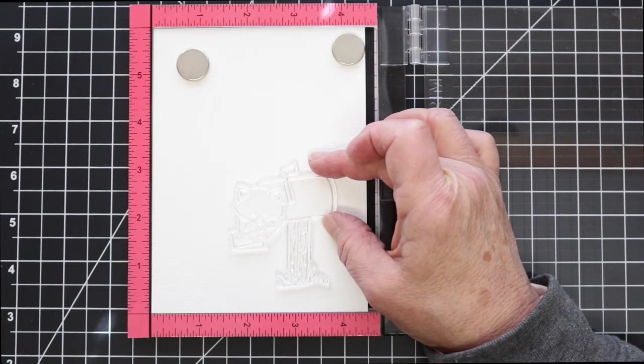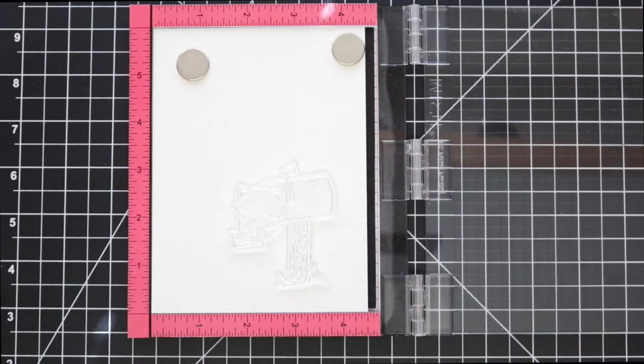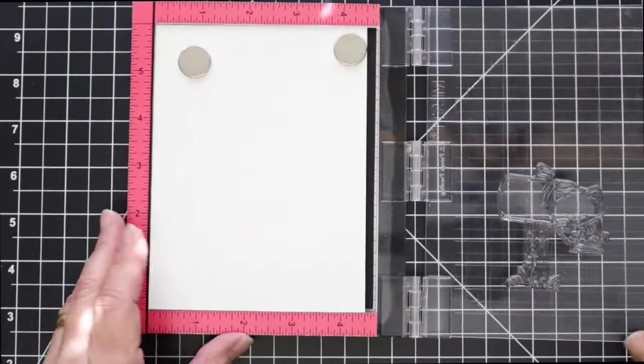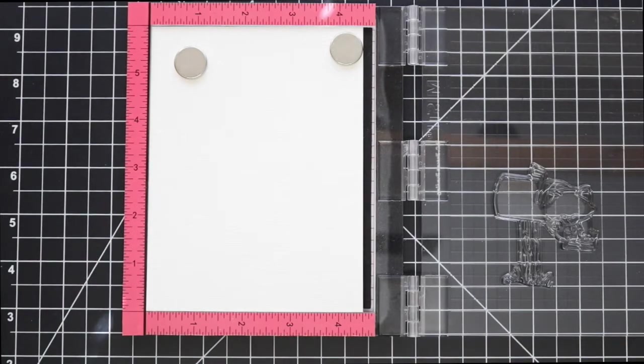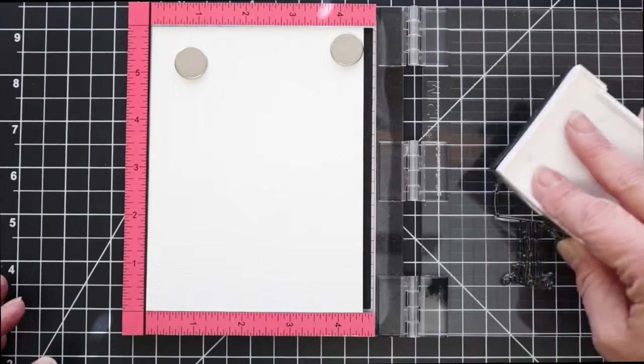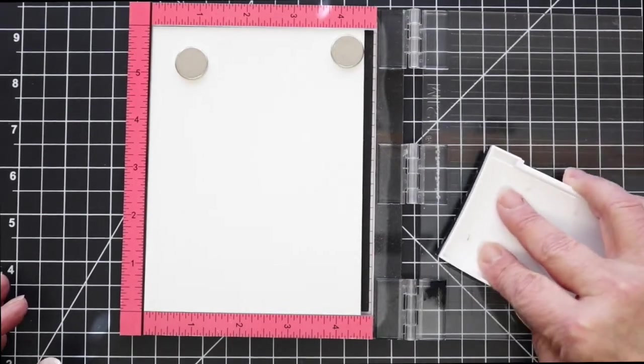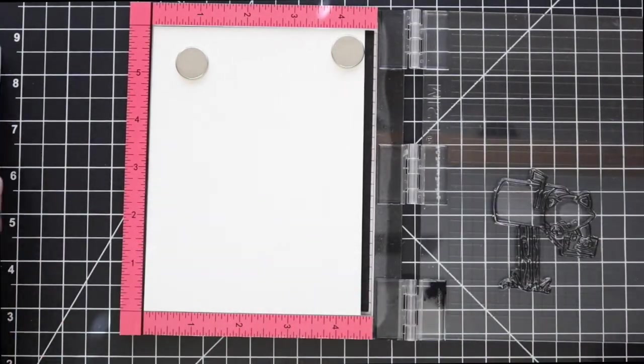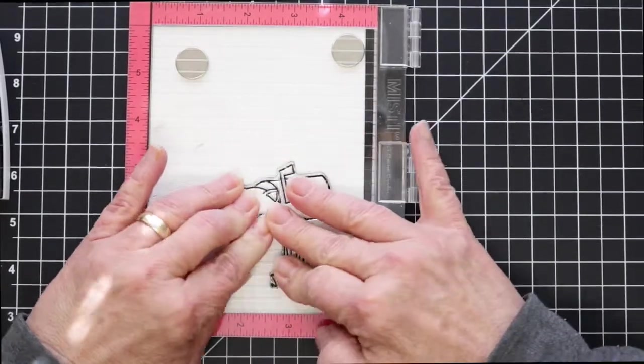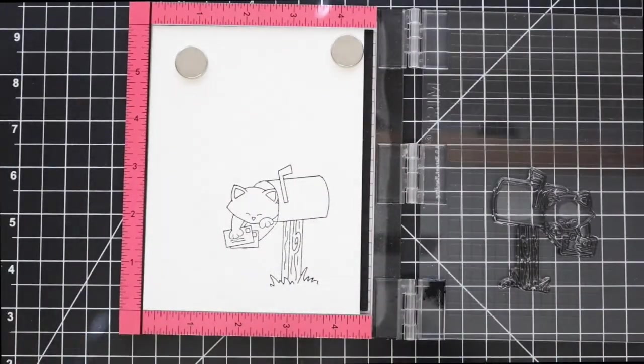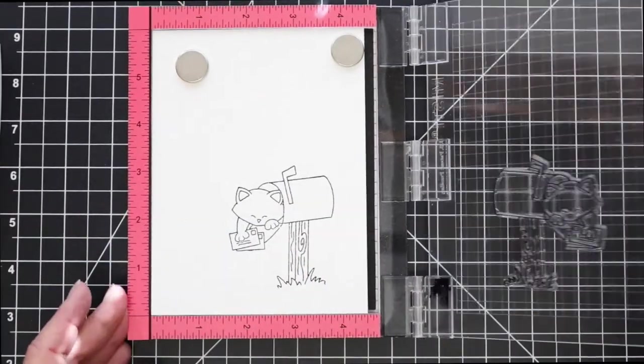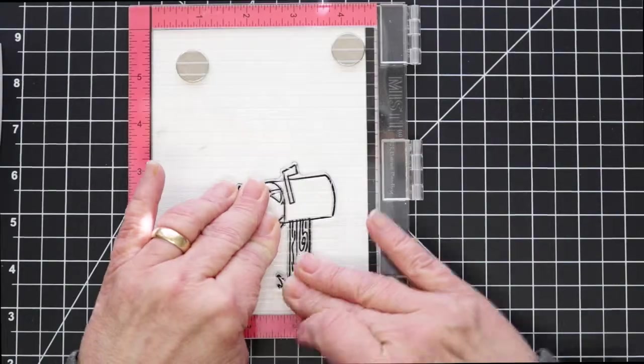I'm going to get that into position and then I'm going to be using the Versafine Onyx Black Ink to do my stamping. You can see here I did not get a good impression so I can just ink it up and go over it one more time.